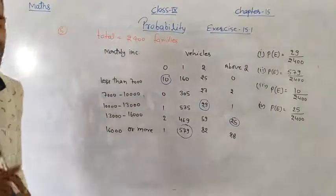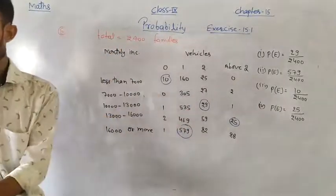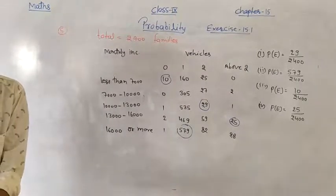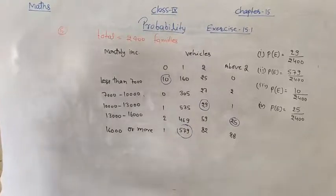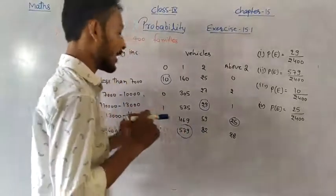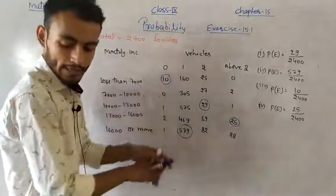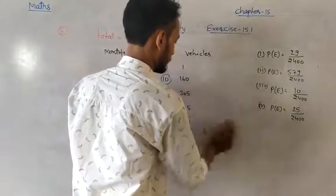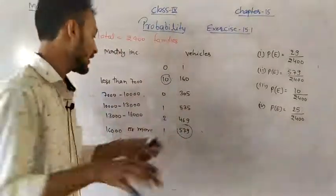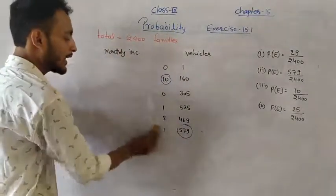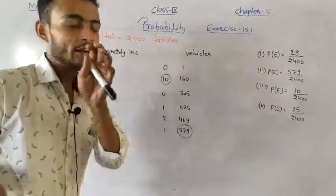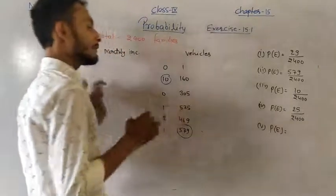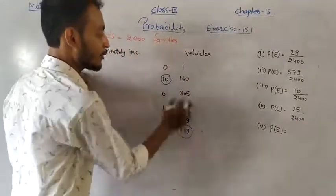Fifth sub-question: owning not more than one vehicle (regardless of income). This includes families with 0 vehicles and 1 vehicle across all income groups. Add all such families from the table — 0-vehicle column and 1-vehicle column.